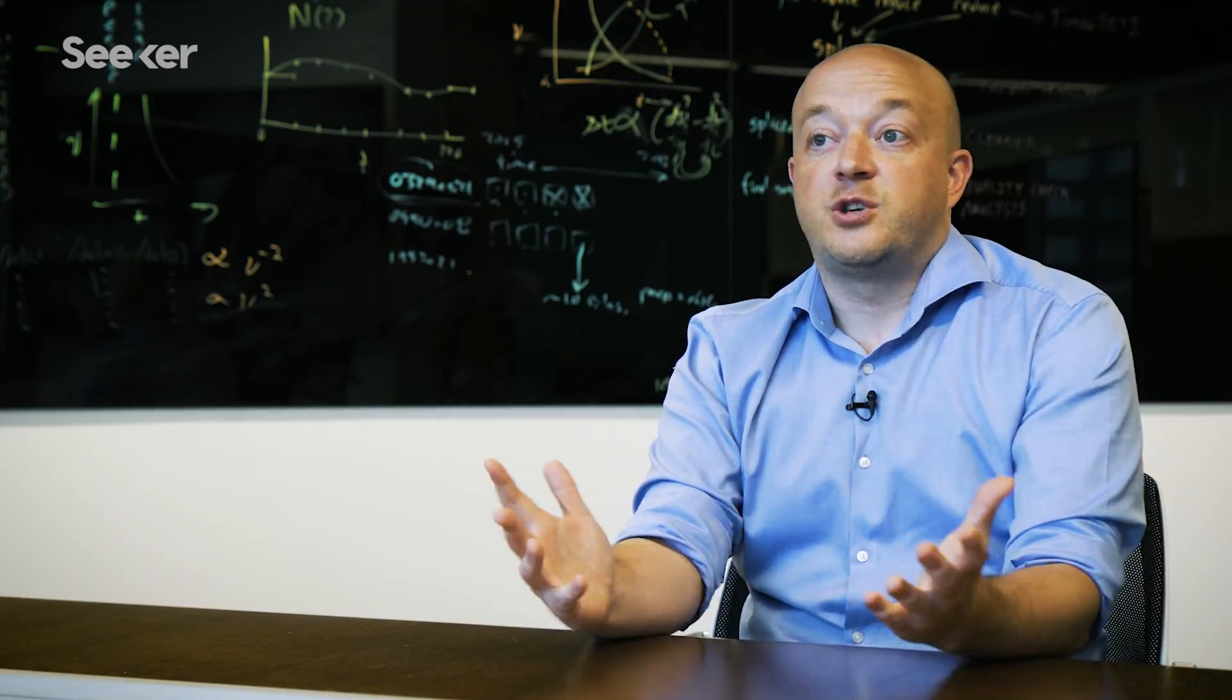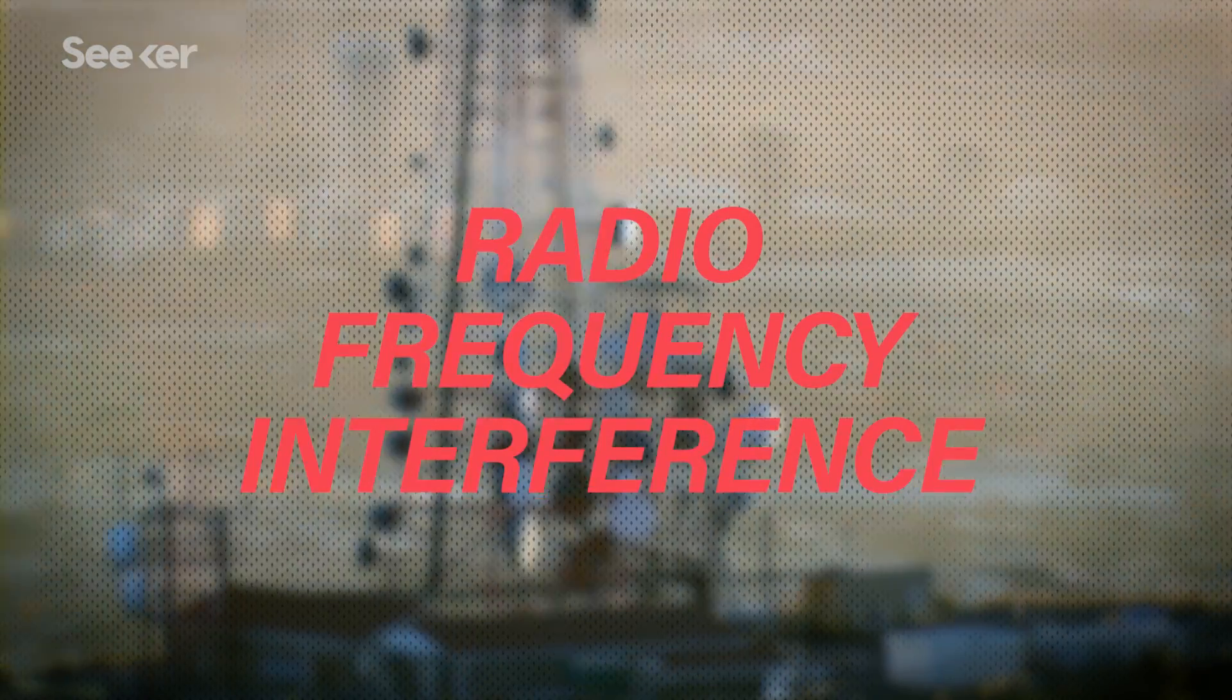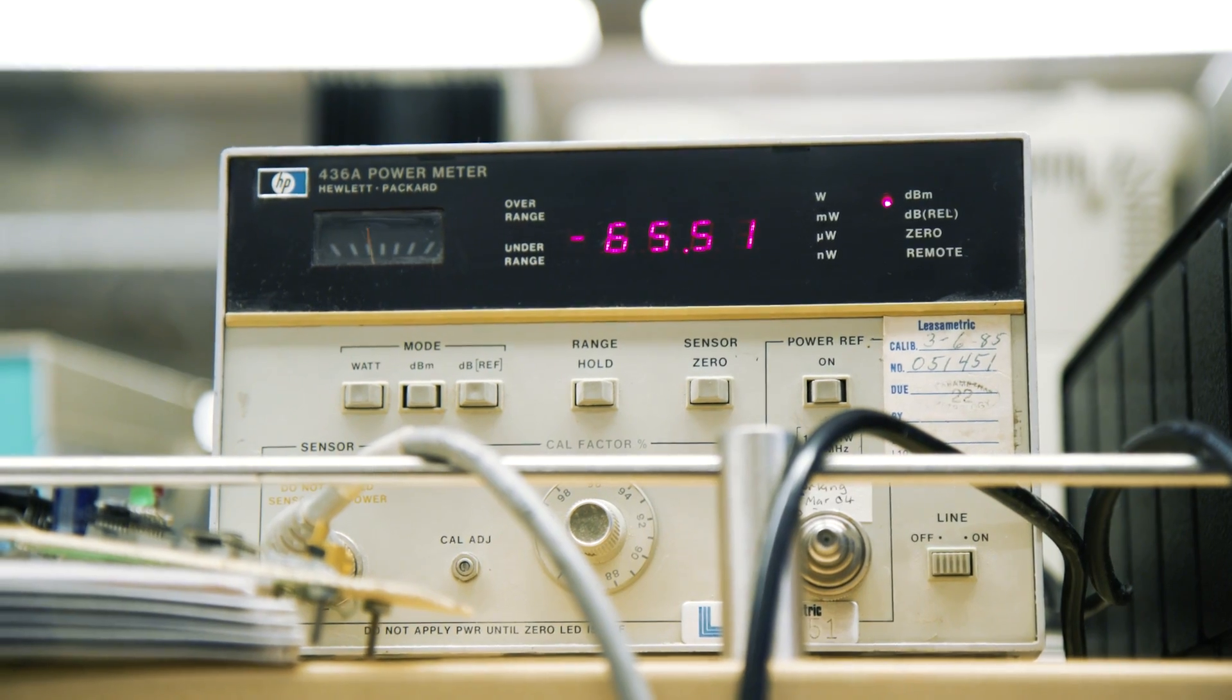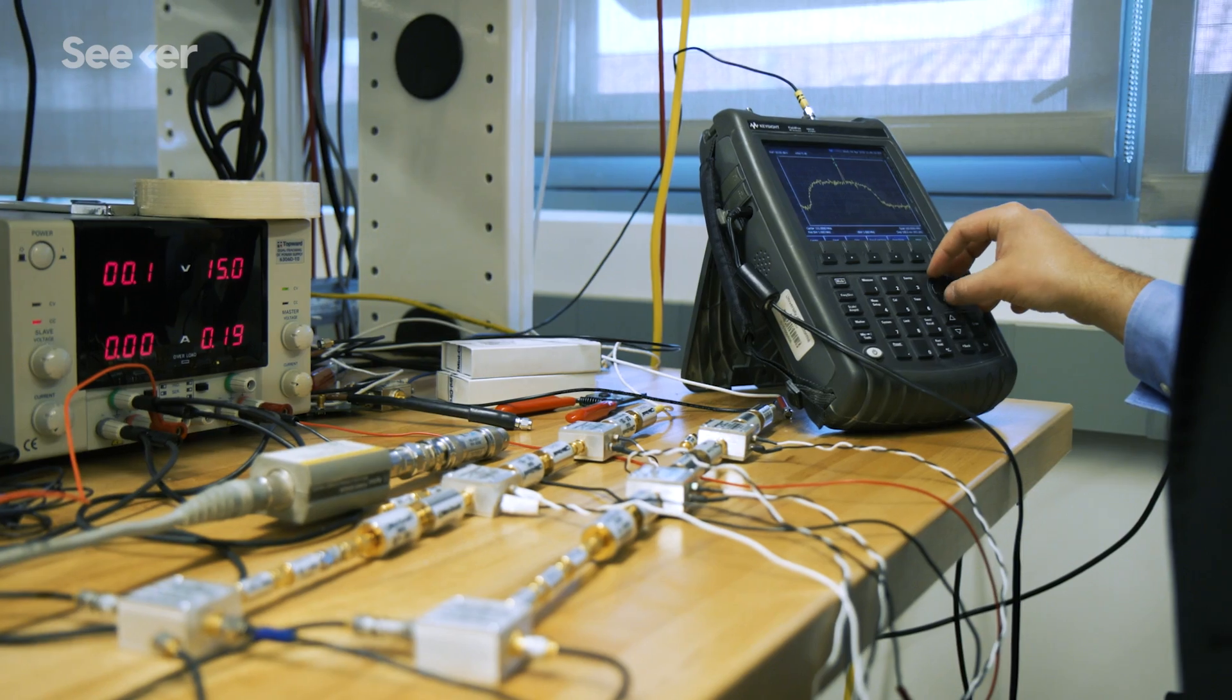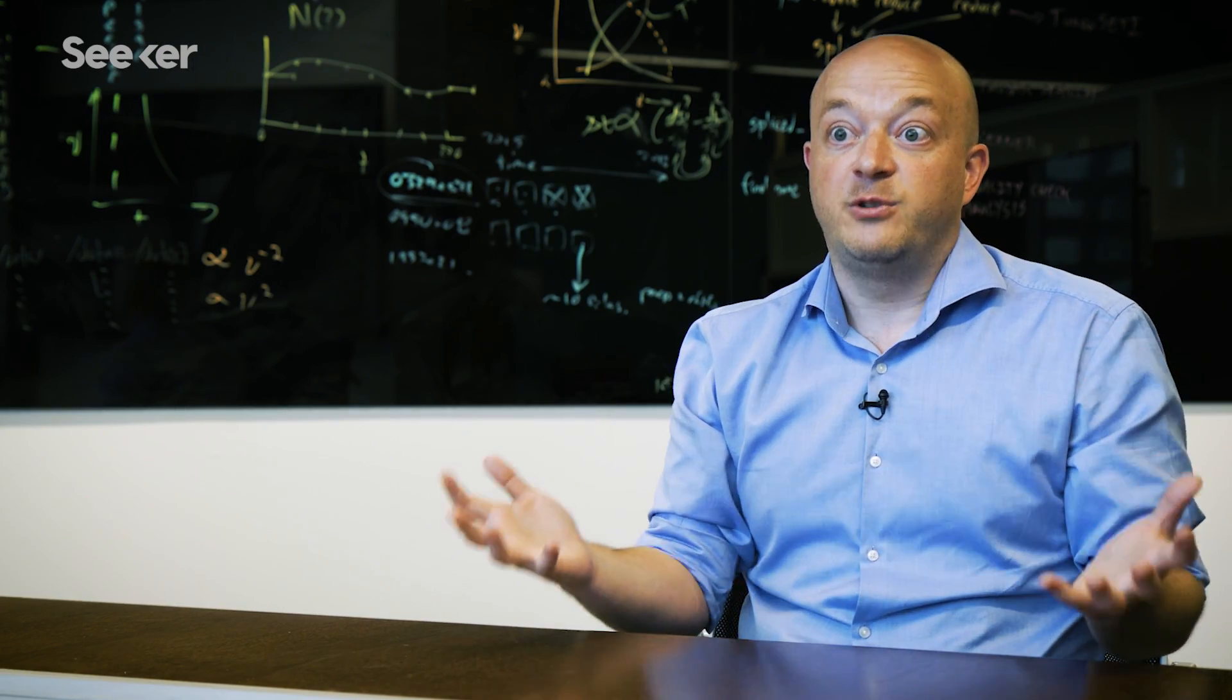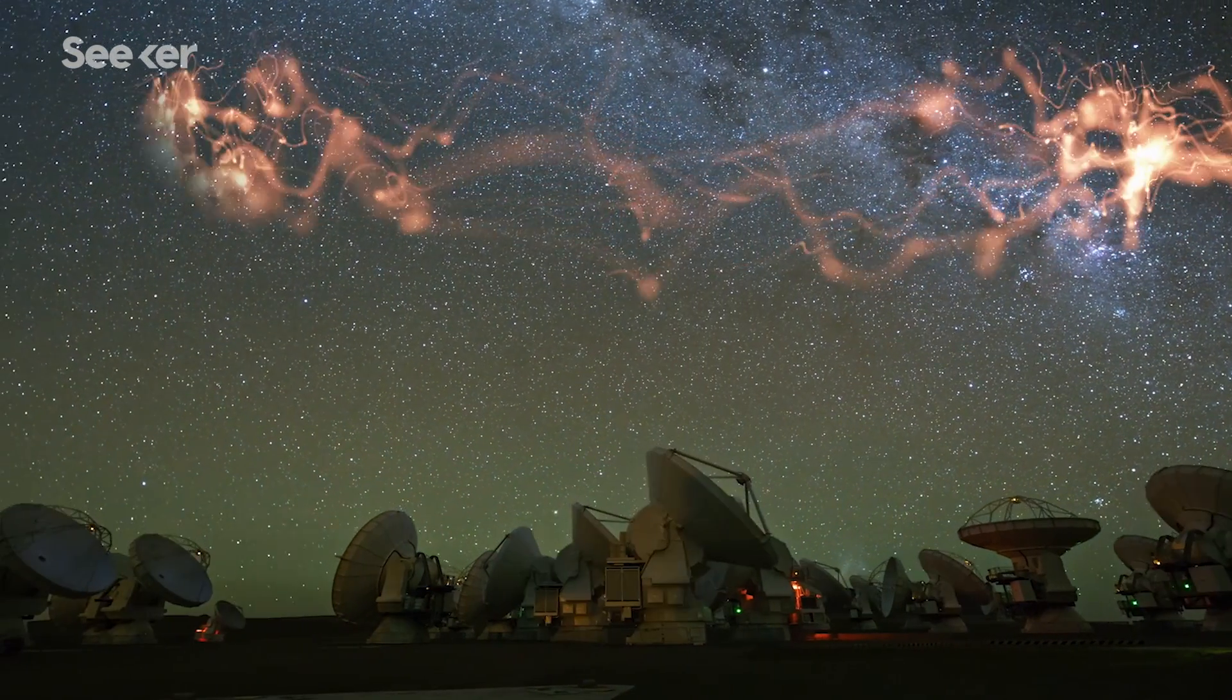So by far the biggest challenge in radio SETI is what we call radio frequency interference. Because we use our own technology as an example of what we should be looking for, when we conduct one of these searches, we in fact find many, many examples of our own technology. And those examples actually pollute the signal that we see, especially with radio telescopes.